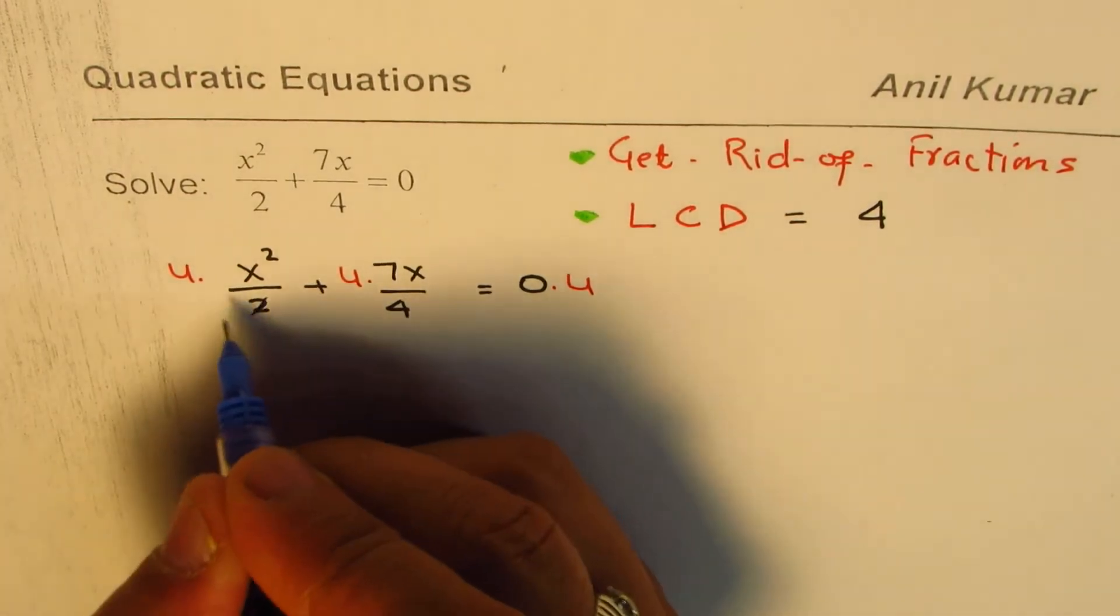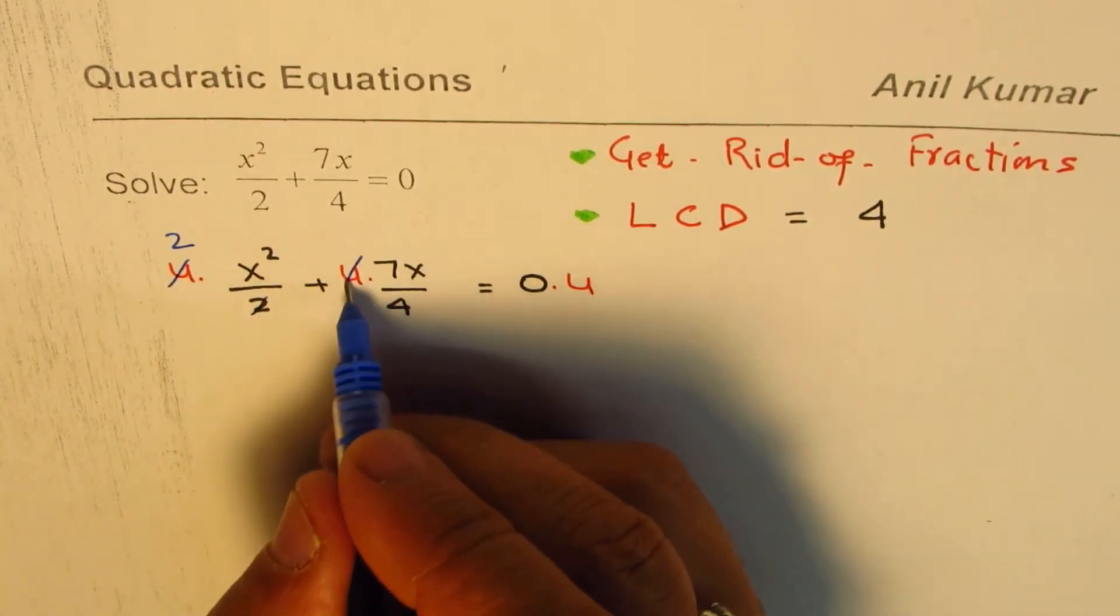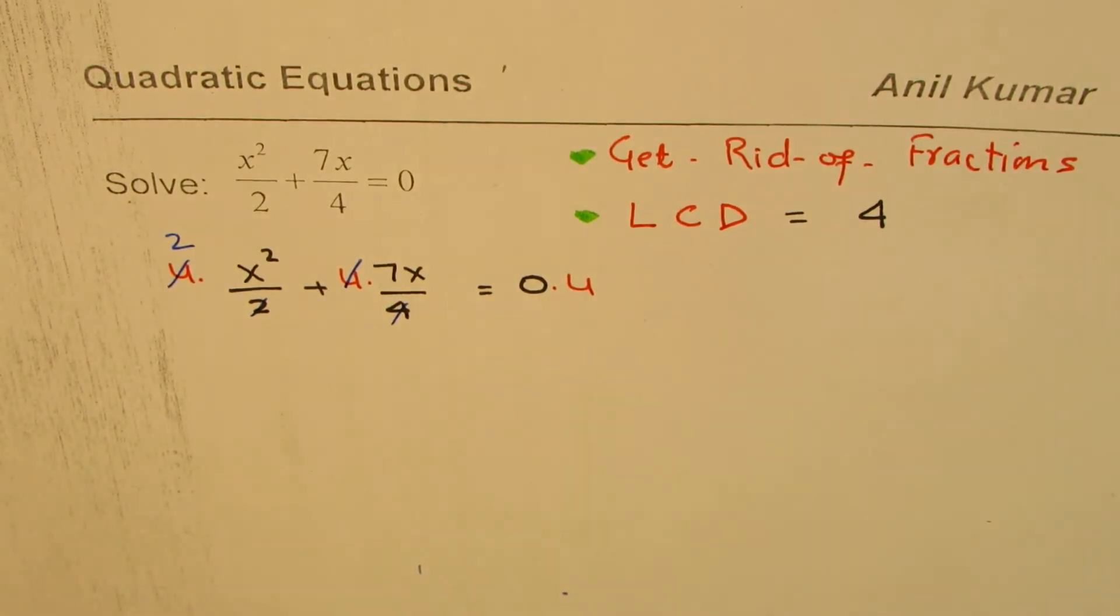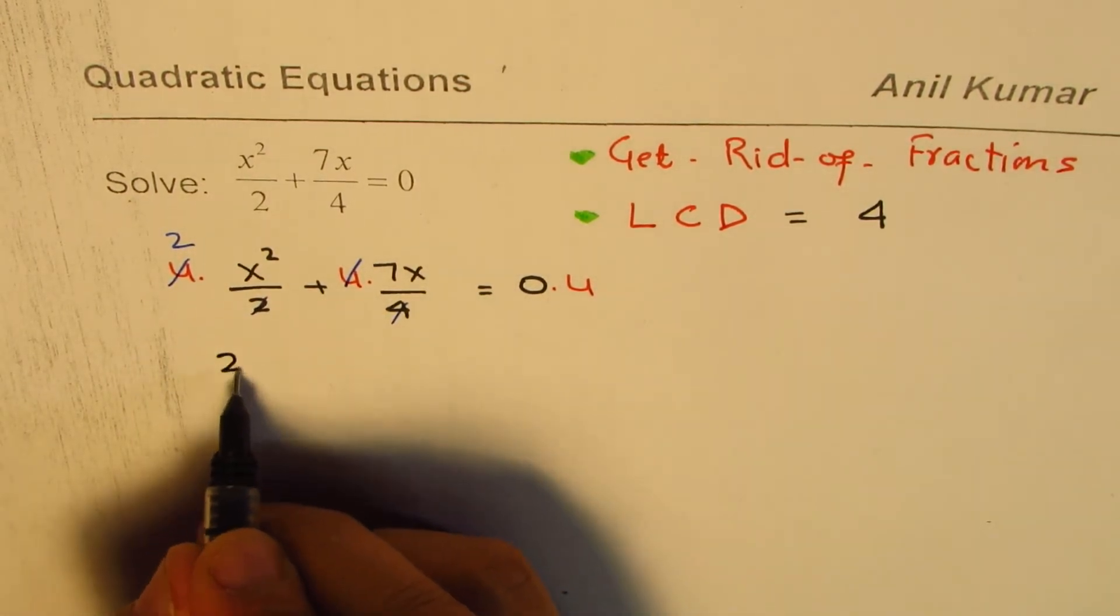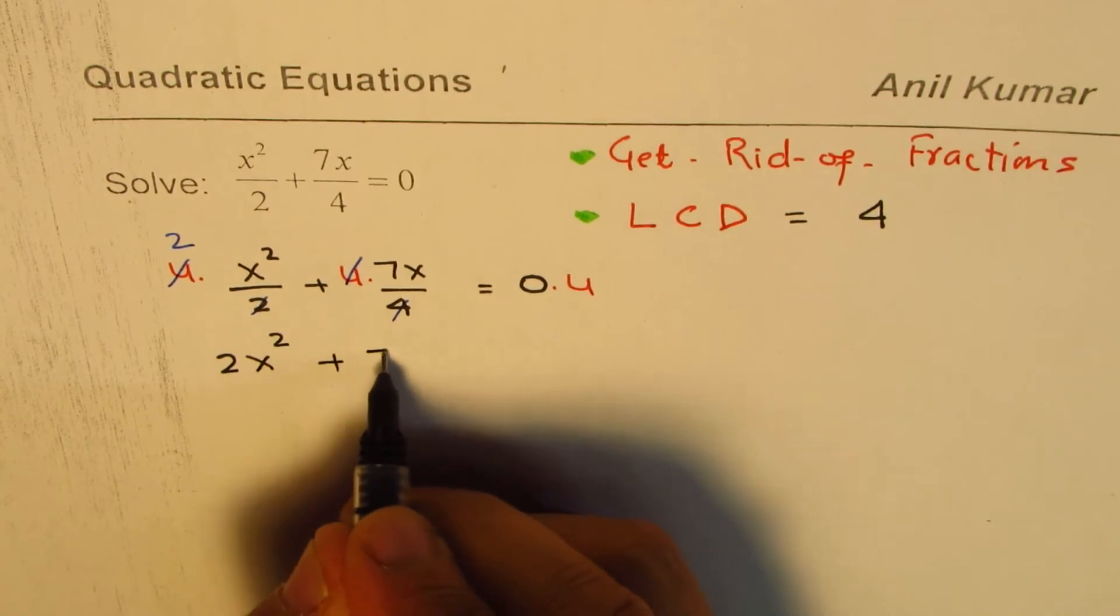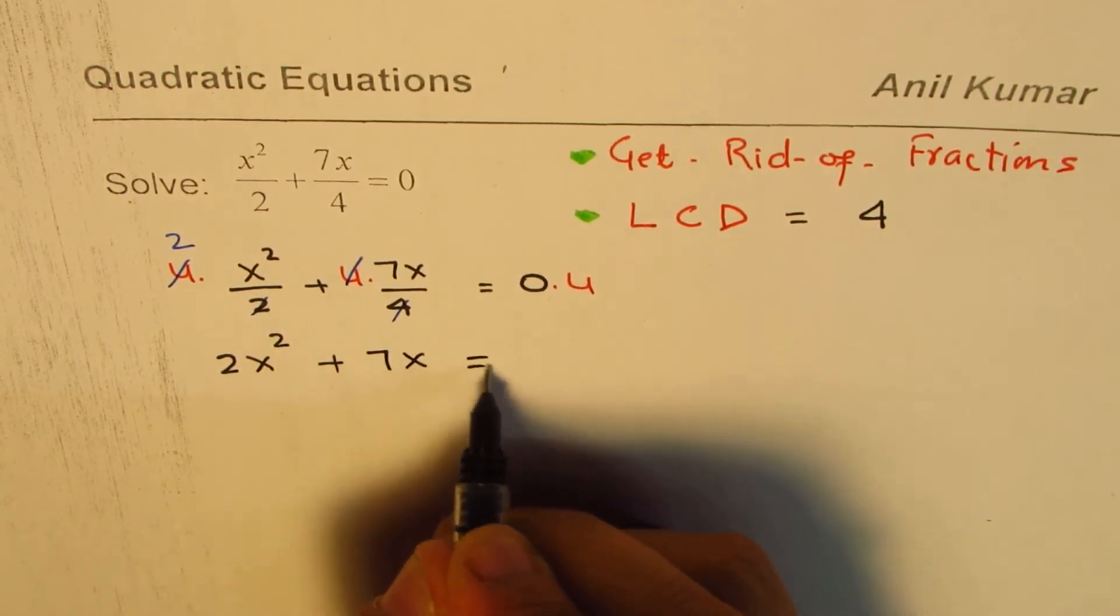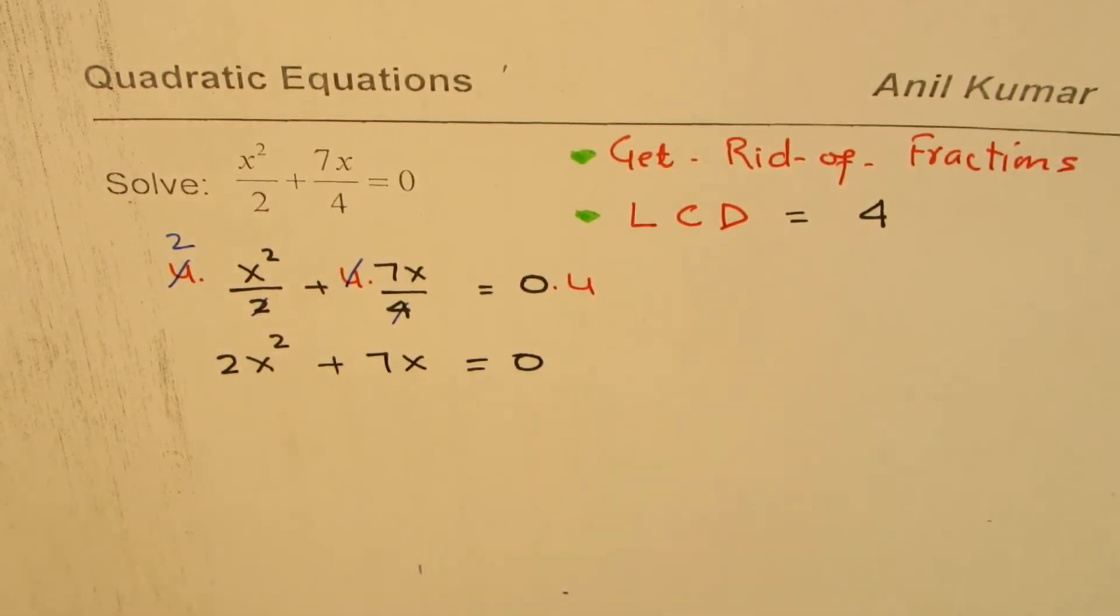So what we get here is, 4 goes into 2 twice, and there it cancels. So what we get here is 2x squared plus 7x equal to 0. So that's what we get.